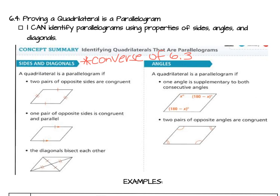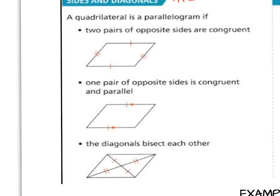Over on the left it talks about sides and diagonals. The statement reads a quadrilateral is a parallelogram if two pairs of opposite sides are congruent. If you have that marked you know it's a parallelogram. One pair of opposite sides is both congruent and parallel. That's enough to justify that we have a parallelogram. The diagonals bisect each other. That's another one to show you have a parallelogram. You only need one of these to justify that answer. Notice they're all related to sides and diagonals.